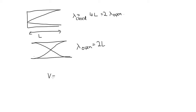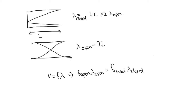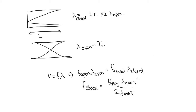Now we have the equation v is equal to f lambda. v is the speed of sound in air, and that's constant for these two situations. So f_open times lambda_open is equal to f_closed times lambda_closed. And so f_closed is equal to f_open times lambda_open over lambda_closed, which is 2 times lambda_open. This gives us f_closed equal to one half f_open. So the frequency in the closed pipe is half the frequency in the open pipe.